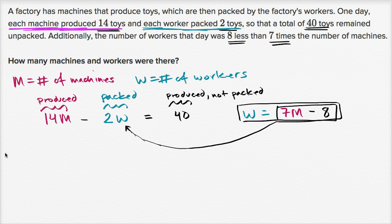And so we are going to get 14M minus two times seven M minus eight. So seven M minus eight. And we get that equals 40.